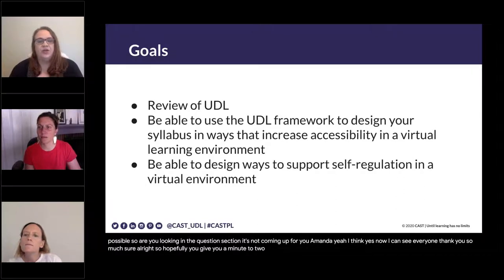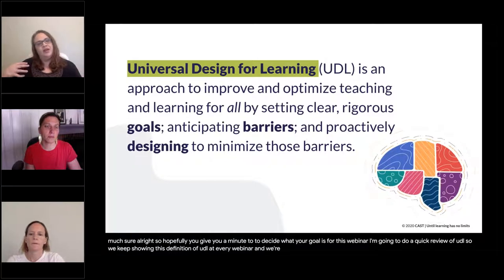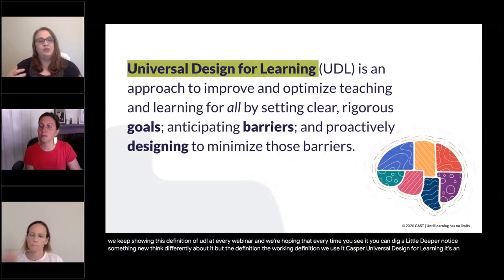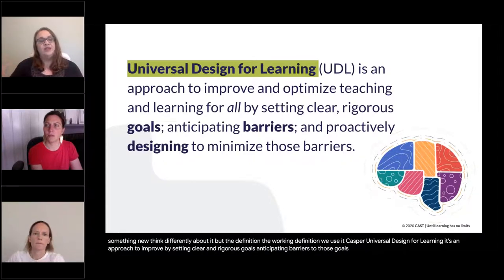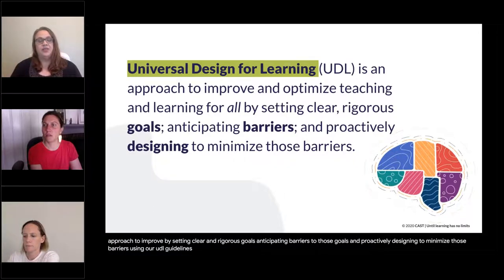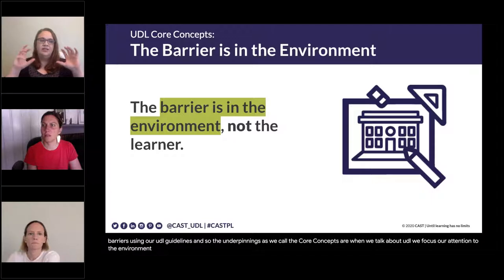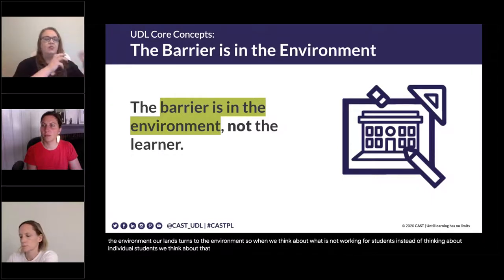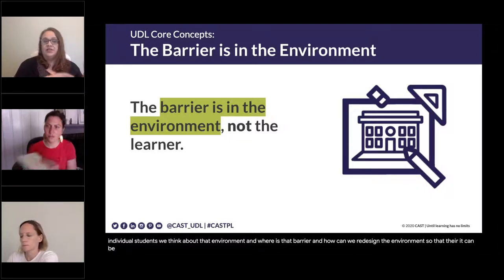Let me do a quick review of UDL. We keep showing this definition at every webinar, hoping that every time you see it, you can dig in a little deeper and notice something new. The working definition we use at CAST for Universal Design for Learning: it's an approach to improve and optimize teaching and learning for all by setting clear and rigorous goals, anticipating barriers to those goals, and proactively designing to minimize those barriers using our UDL guidelines. When we talk about UDL, we focus our attention to the environment — when something is not working for students, instead of thinking about individual students, we think about the environment and where the barrier is, and how we can redesign the environment so it can be open to all. The barrier is in the environment, not the learner — that's our first core concept.